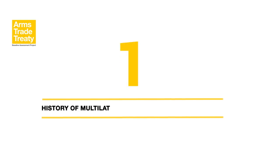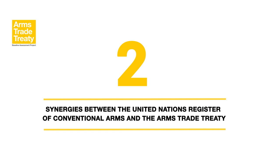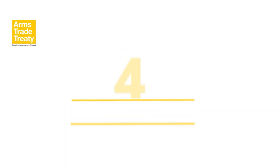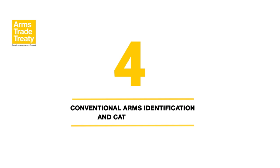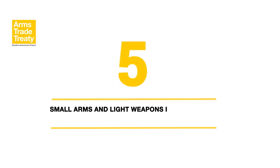The online tutorial has five modules. Module 1: History of Multilateral Transparency Instruments. Module 2: Synergies between the United Nations Register of Conventional Arms and the Arms Trade Treaty. Module 3: Data Collection Sources and Methods. Module 4: Conventional Arms Identification and Categorisation. Module 5: Small Arms and Light Weapons Identification and Categorisation.